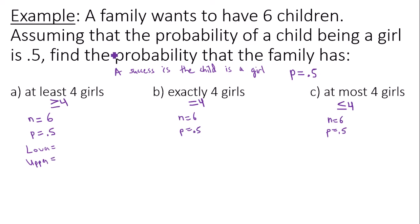What does vary slightly though would be your lower bound and upper bound that you put into Google Sheets. So if you're interested in at least four girls, this would mean four, five, all the way up through six. You can't have seven because you only have six children. You can never exceed the number of trials. So the lower bound is four, upper bound is six.